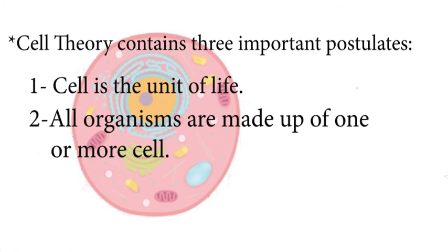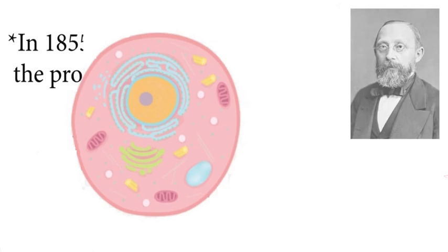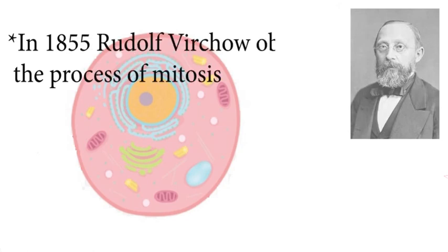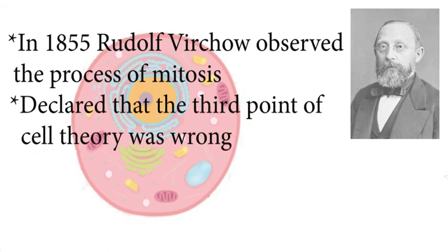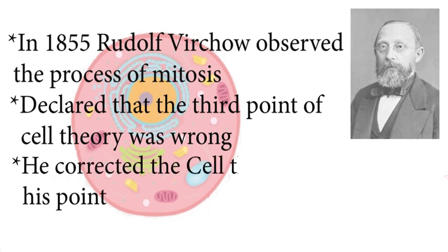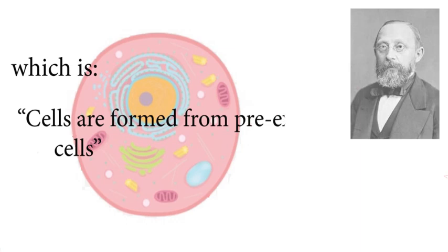But later in 1855, Austrian biologist Rudolf Virchow observed the process of mitosis and declared that the third point of cell theory was wrong. He then corrected the cell theory by presenting his revised third point, which states: cells are formed from pre-existing cells.